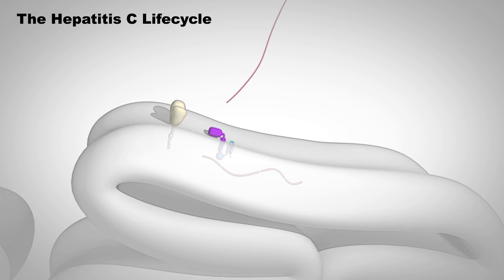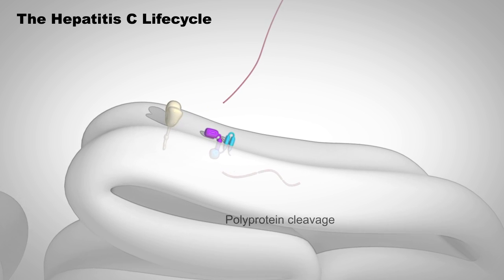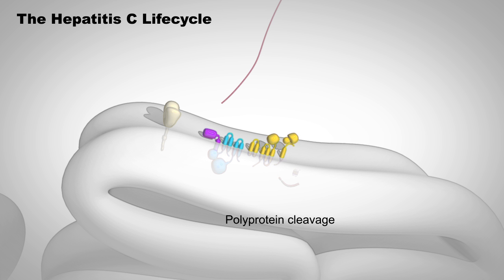Translation of the HCV genome results in a large polyprotein that is then cleaved by host and viral proteases to produce ten viral proteins: three structural proteins used to assemble new viral particles, and six non-structural proteins which support viral RNA replication.